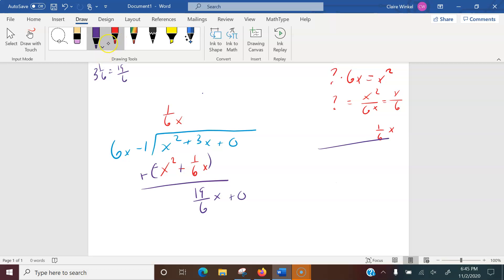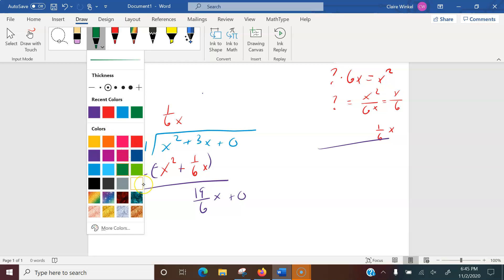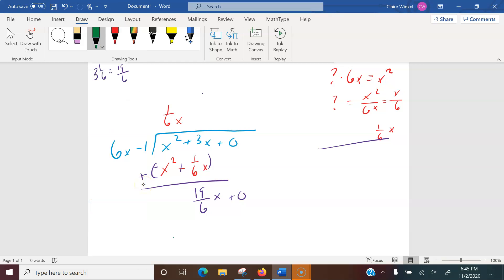And then we want to start over. Again we're going to ask what times 6x gives us 19 sixth x. So in this case it's question mark times 6x equals 19 over 6x. We can divide by 6x, the x's cancel and we end up with a 19 over 36. So what goes here is 19 over 36.